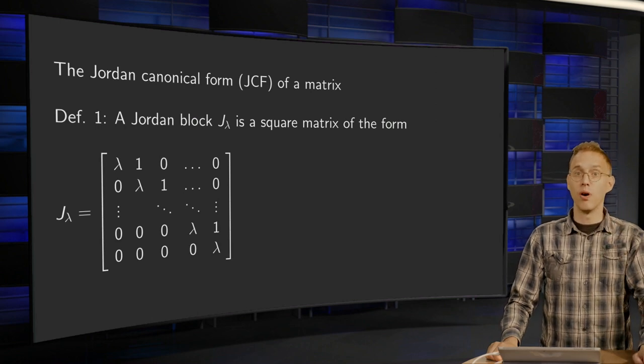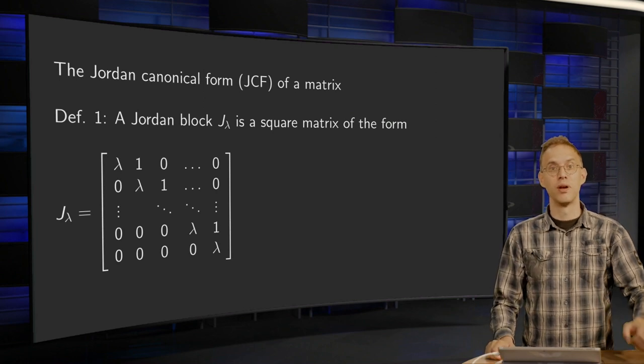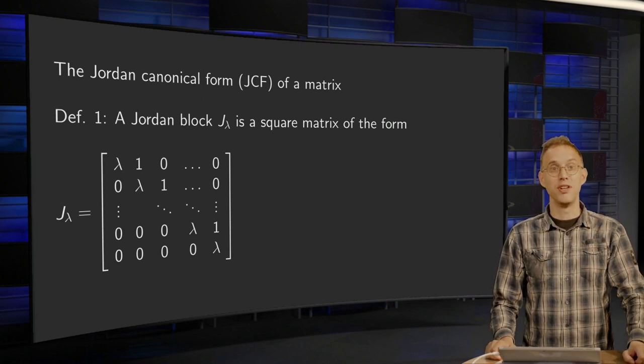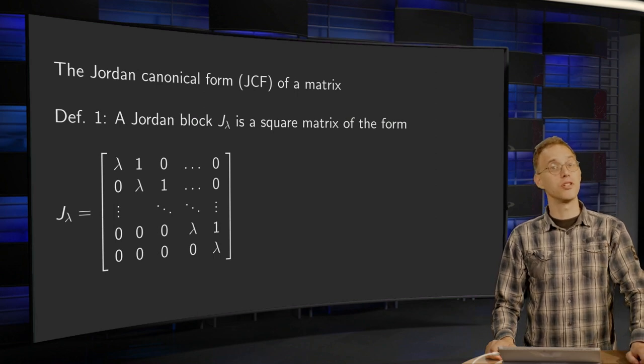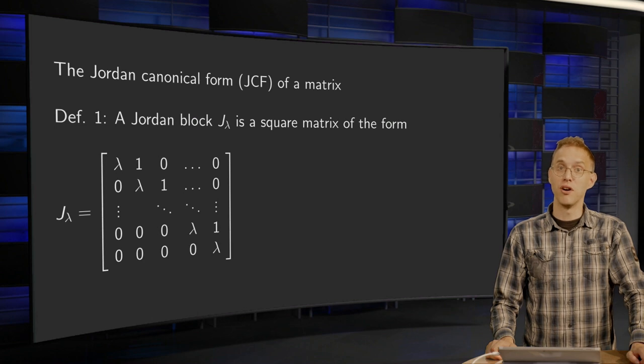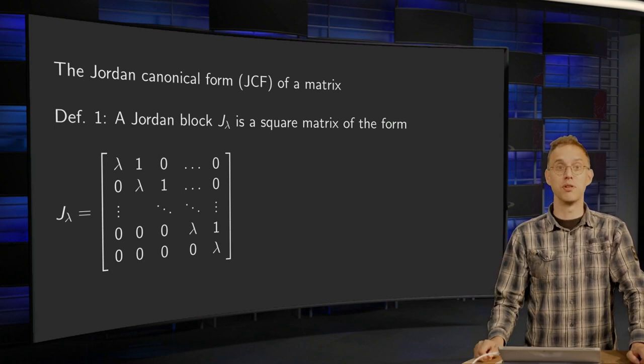No, we always have enough eigenvalues. That is not the problem. The problem is that we do not have enough independent eigenvectors, because sometimes the geometric multiplicity of an eigenvalue is lower than its algebraic multiplicity.